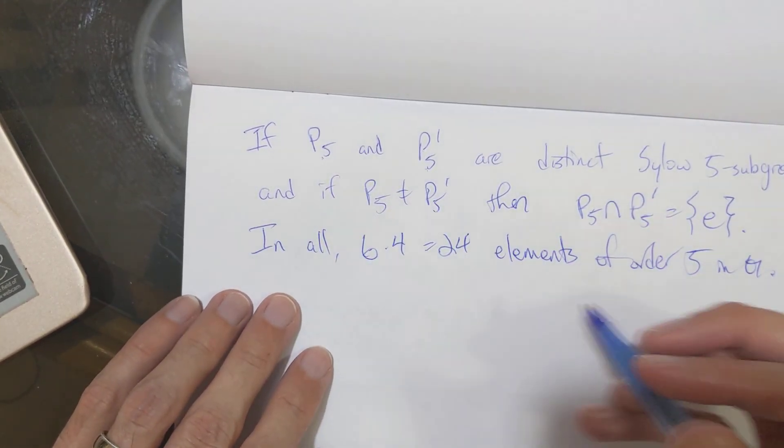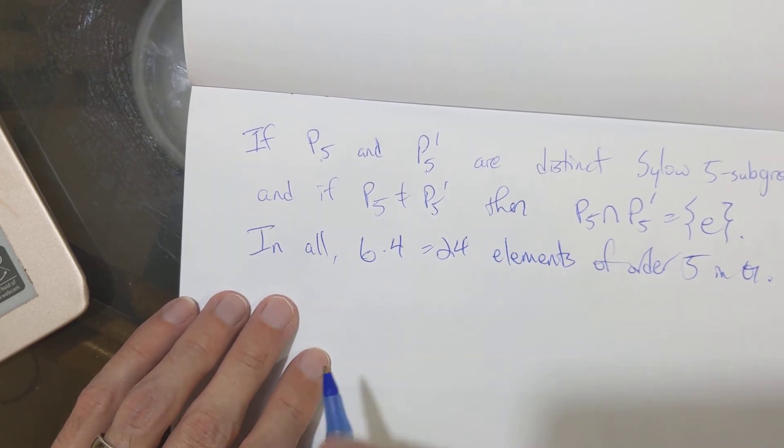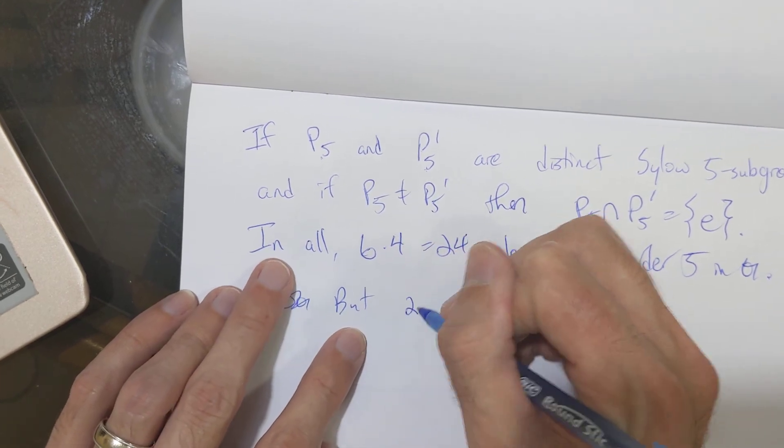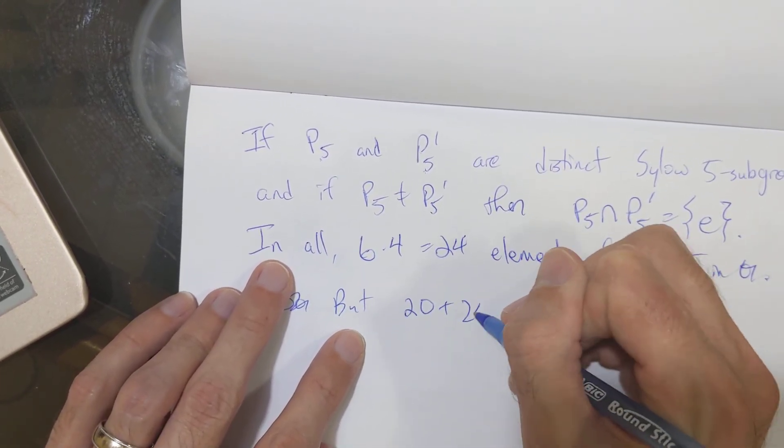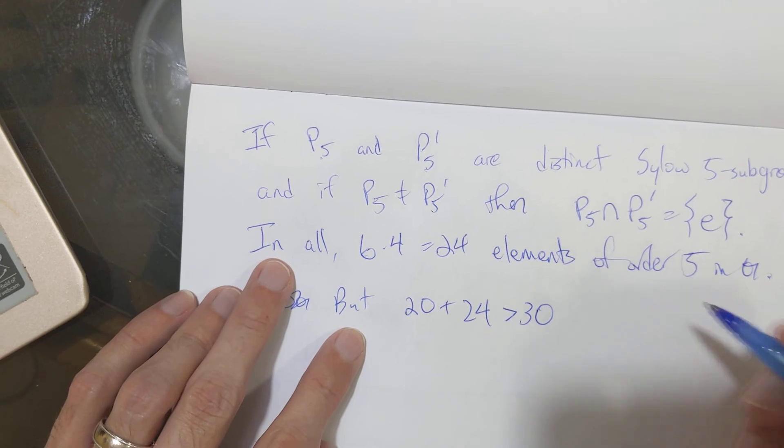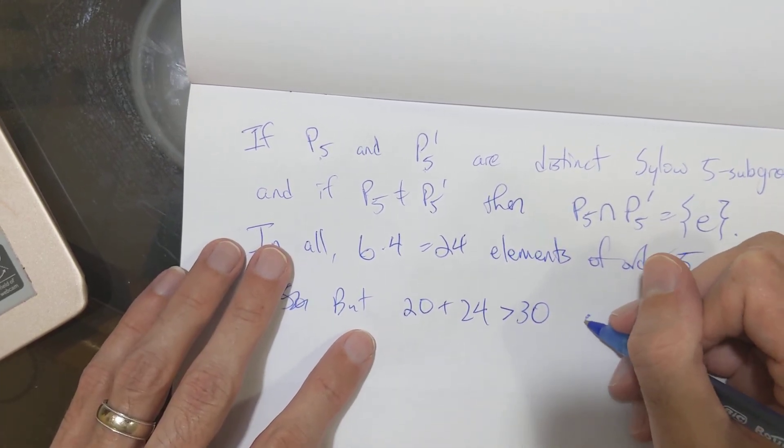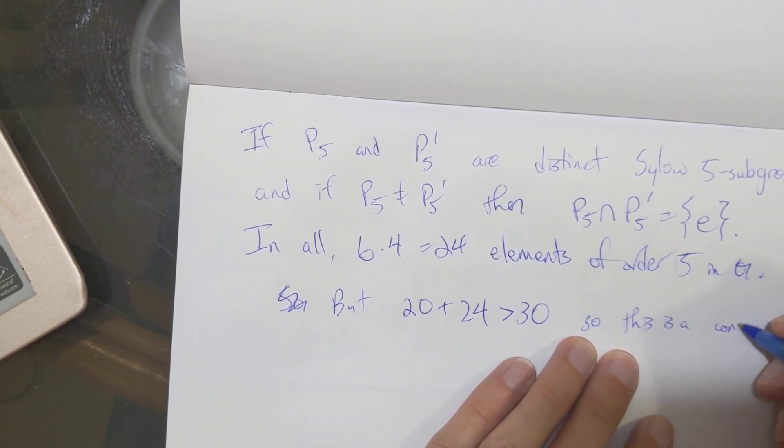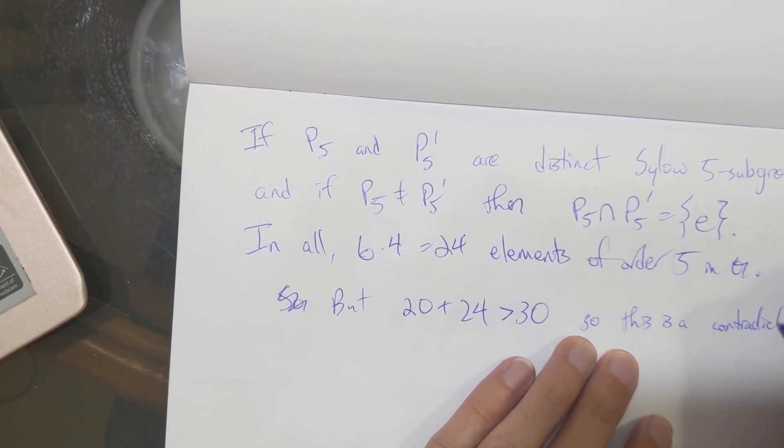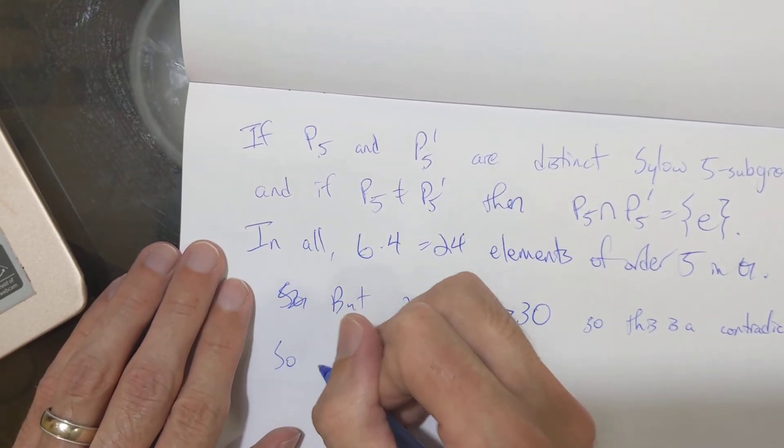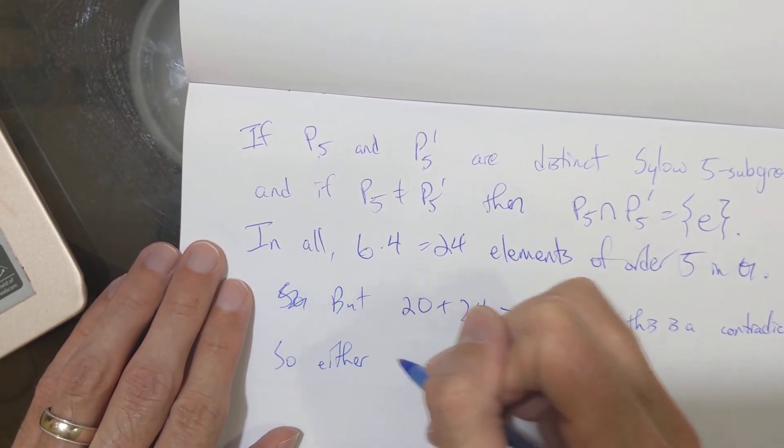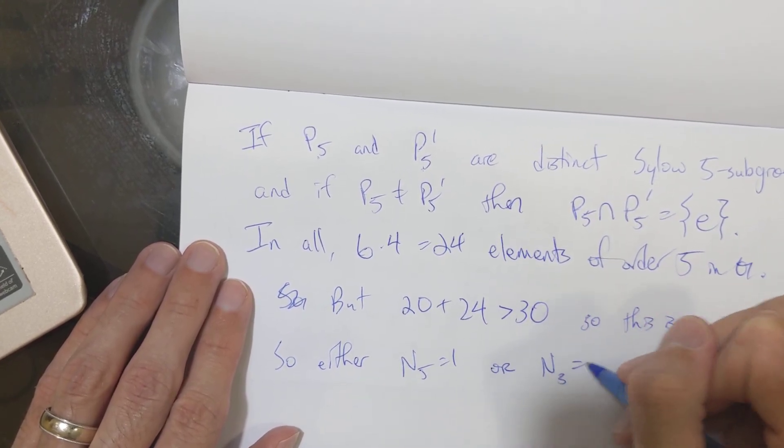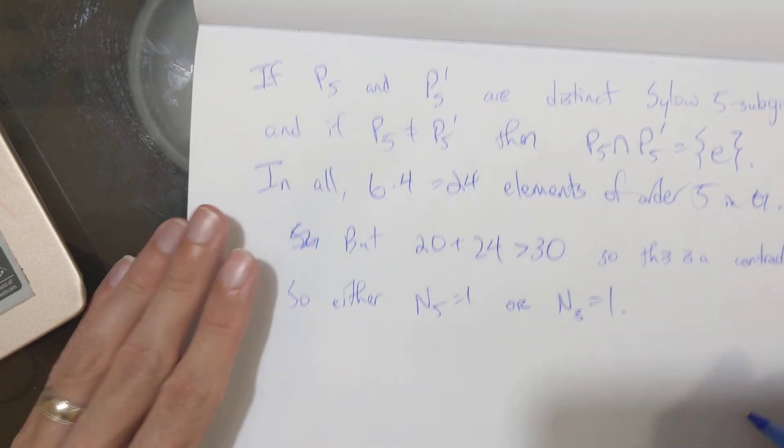And G. And so, so far we have 20 elements of order three and 24 elements of order five. But this is more than the 30 elements of G. So this is a contradiction. So at least one of the two has to be one. So either N5 equals one or N3 equals one.